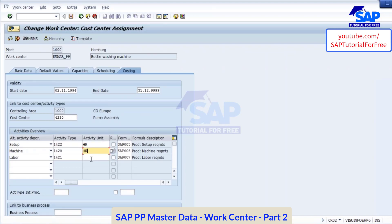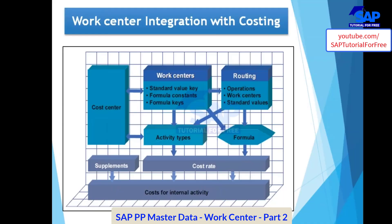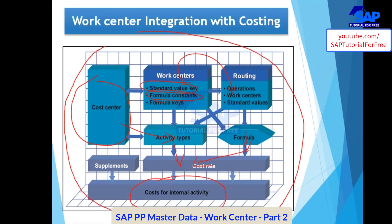Let's say I want to calculate my production costs. They will maintain a rate per hour — how much cost they will maintain. Based on that it will get calculated. You have the cost center; in the cost center they maintain the activity type. In this activity type they maintain the rate per hour. In your work center you maintain the standard value key and formulas, and you assign this to routing in the operation. Based on the formulas your duration gets calculated, and that duration multiplied by rate gives your production cost.